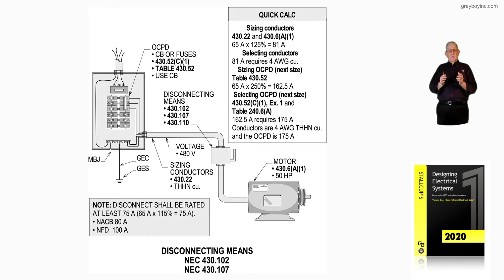Table 210.3 along with table 220.3 will refer you to 430.22, and 125 percent of 65 is 81 amps. But notice the tables will refer you over to the part in Article 430 that will get you to 430.22. Selecting the conductor from our table 310.16, 81 amps requires a number 4 conductor.